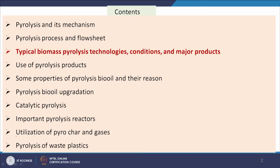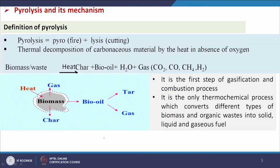Hello everyone. Now we will discuss the topic solid waste and hazardous waste management part 4. In this class we will focus on pyrolysis. Contents are: pyrolysis and its mechanism, pyrolysis process and flowsheet, typical biomass pyrolysis technologies, conditions and major products, use of pyrolysis products, properties of pyrolysis bio-oil and aging, pyrolysis bio-oil upgradation, catalytic pyrolysis, important pyrolysis reactors, utilization of pyrochar and gases, and pyrolysis of waste plastics.